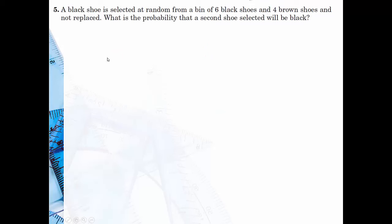A black shoe is selected at random from a bin of six black shoes and four brown shoes and not replaced. What is the probability that the second shoe selected will be black? This one, notice how it's kind of just asking about the second shoe. So on this probability, I just said, well, let me just think about that second black shoe. If we've already taken one of the black shoes out of play, there are only five left and there are a total of nine shoes left. So I would say the answer for this problem is five over nine.